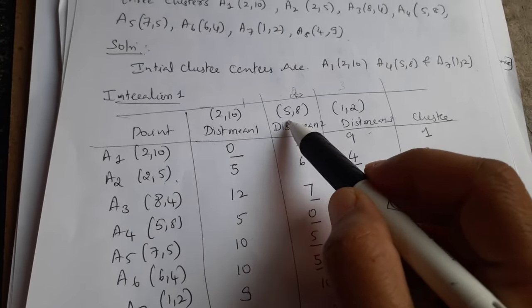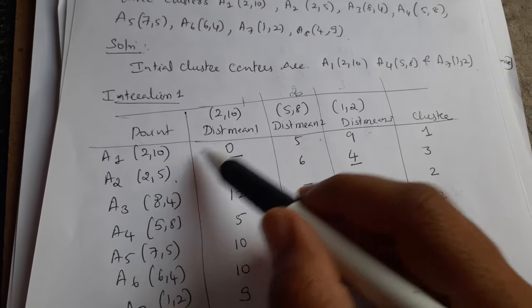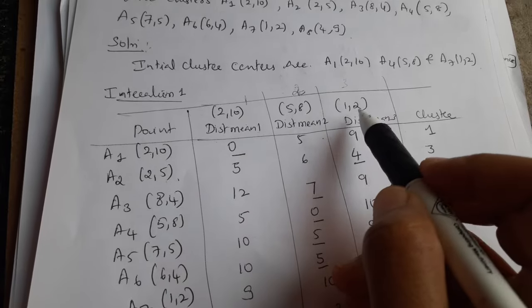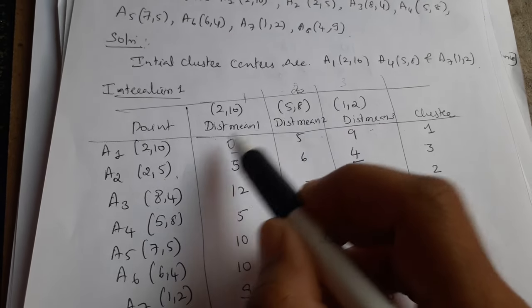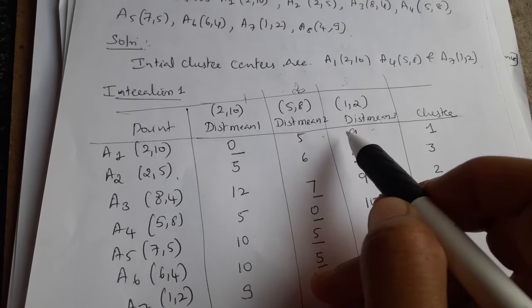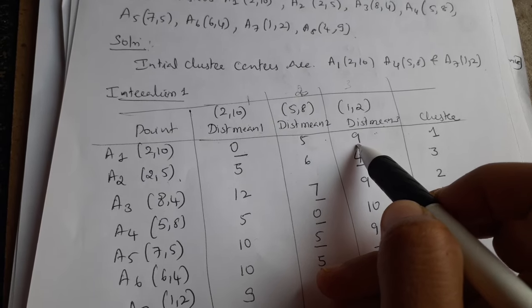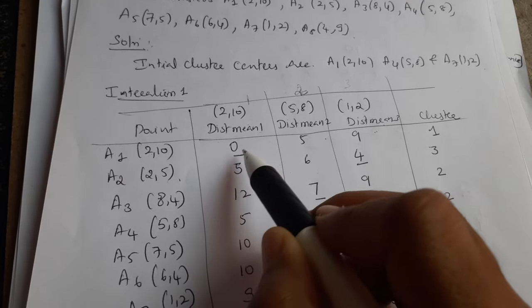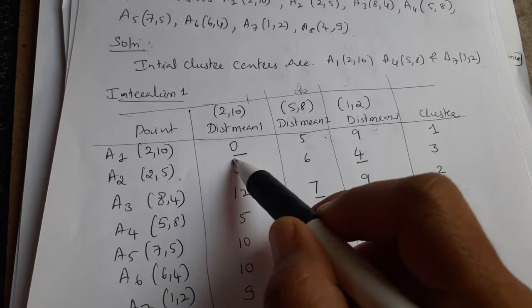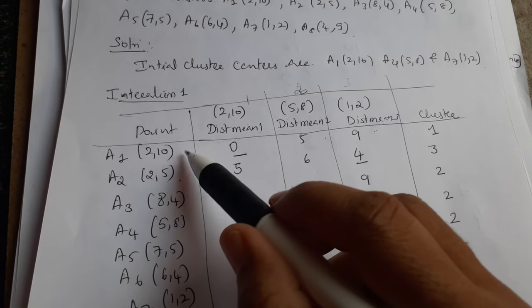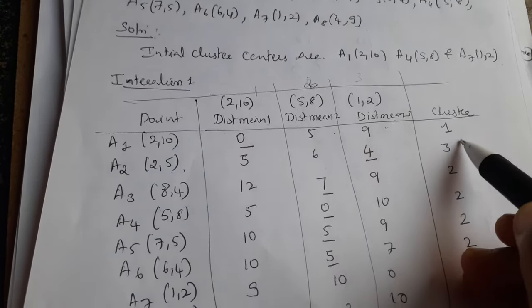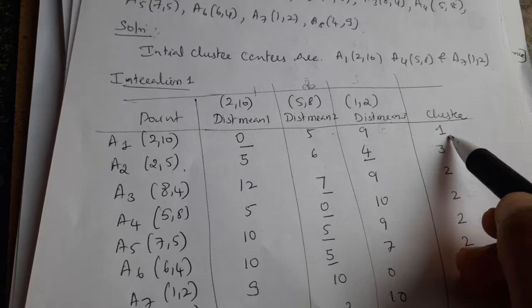For the first data point A1, the distance to cluster center 1 is 0, to cluster center 2 is √((2−5)²+(10−8)²) = 5, and to cluster center 3 is √((2−1)²+(10−2)²) = 9. The minimum value is 0, so this data point is nearest to cluster center 1 and is assigned to cluster 1.